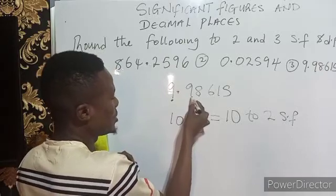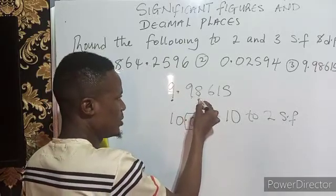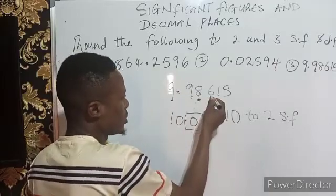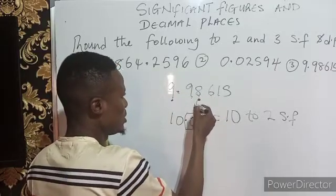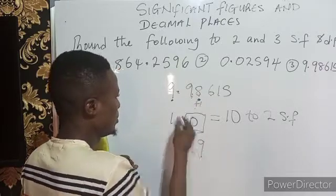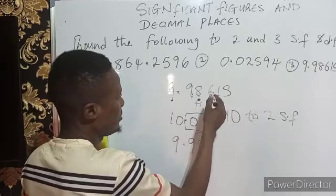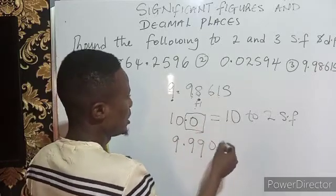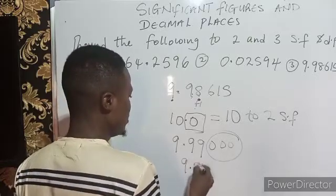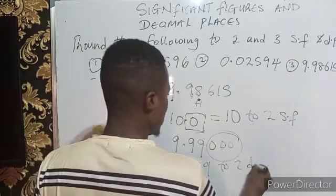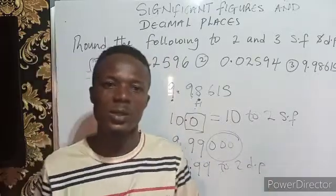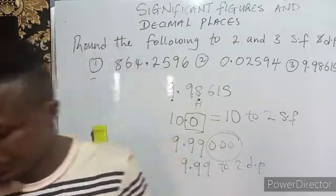To put 9.98615 to two decimal places, you begin to count after the decimal point: one and two — stop. This is your target. The next number is up to five, so you add one: eight turns to nine. You write 9.99 — every other number turns to zero, and zeros are insignificant, so the answer is 9.99 to two decimal places. That's just the way to do decimal places and significant figures.